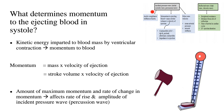Now let's talk about momentum. What determines the momentum of the ejecting blood in systole? Momentum is the kinetic energy imparted to the blood mass by ventricular contraction. Momentum equals mass times velocity of ejection — that is, stroke volume, which constitutes the blood mass, multiplied by velocity of ejection. The amount of maximum momentum and the rate of change in that momentum affects the rate of rise and amplitude of the incident pressure wave or percussion wave.